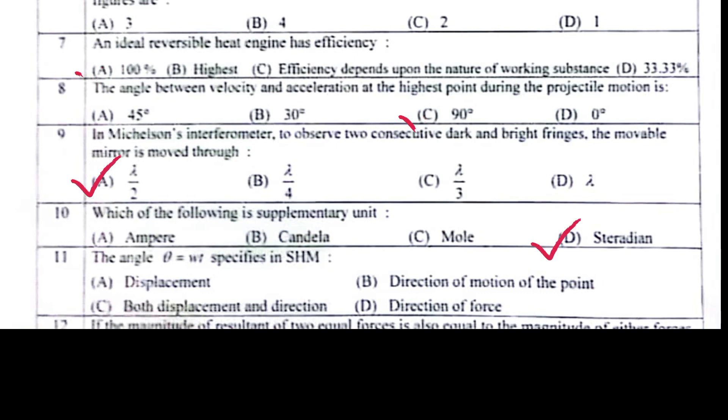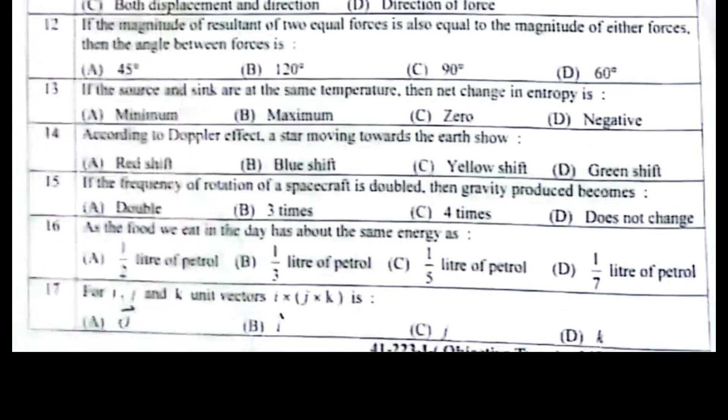If the magnitude of resultant of two equal forces is also equal to magnitude of either force, then the angle between forces is 120 degrees.